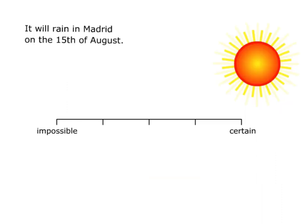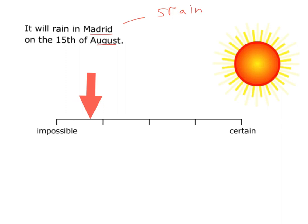This question asks: it will rain in Madrid on the 15th of August. I know Madrid is in Spain. I'm thinking of all the nice hot beaches in Spain — they get a great summer. August is definitely one of the summer months. So I'm thinking if I was to book a holiday, I'd be booking Madrid in August hoping for sunshine. Will it rain in Madrid on the 15th of August? My decision is that it's definitely not impossible, but probably quite unlikely — in between impossible and unlikely, but a little bit closer to unlikely.